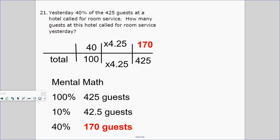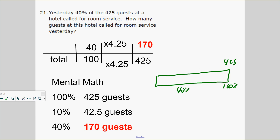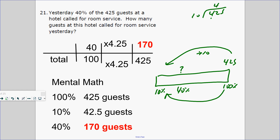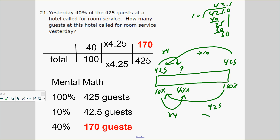Let's practice more percent. Yesterday, 40% of the 425 guests at a hotel called for room service. How many guests called for room service? Let's use a picture. 100% is 425 guests. Break it down into groups of 10%: divide 425 by 10, which is 42.5. How do you build 10% to 40%? Times 4. So 42.5 times 4 equals 170 guests.